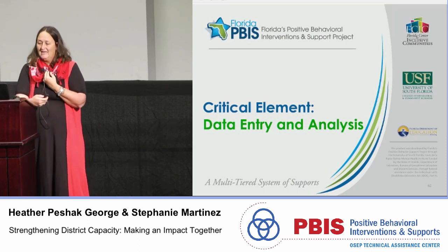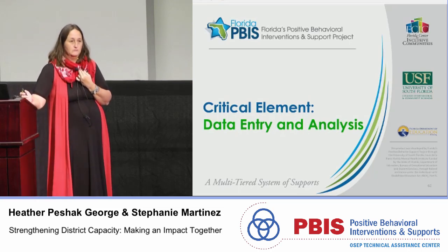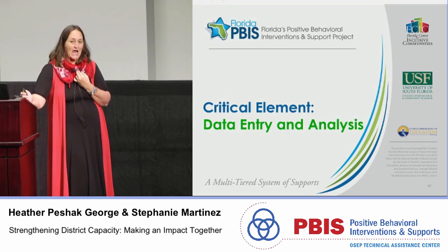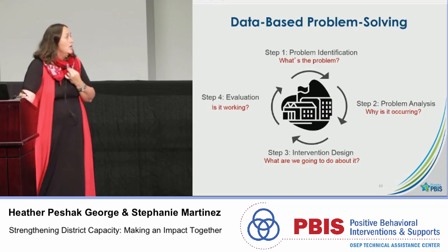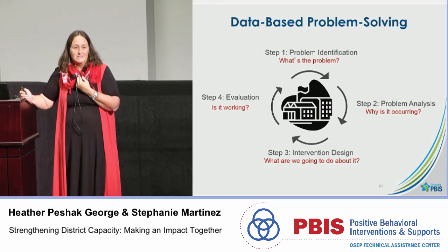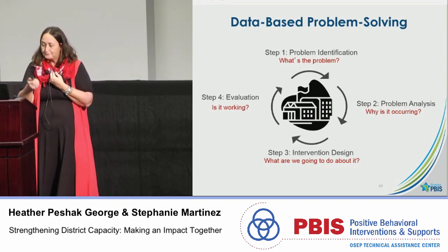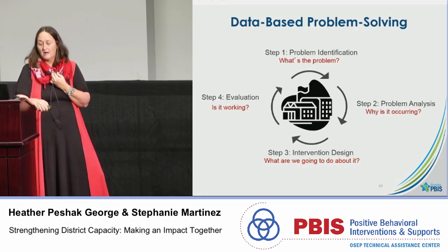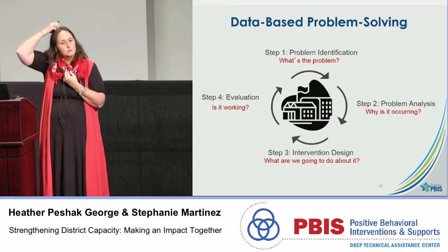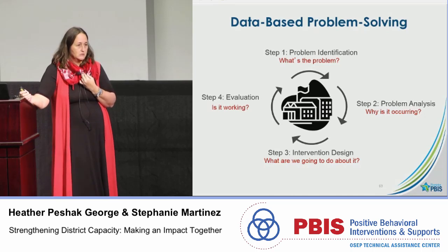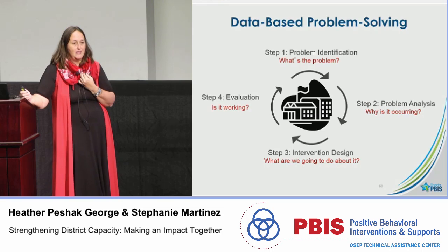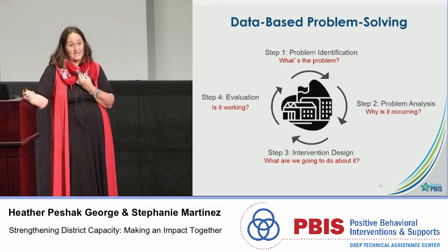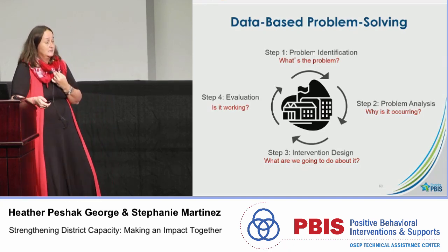The last critical element is looking at data and evaluating. How many of you look at your discipline data monthly? How many disaggregate it — by grade level, race/ethnicity, students with disabilities versus without? In Florida, we use a four-step problem-solving process: identify what the problem is, figure out why it's occurring, match interventions to the reason, and evaluate. This is important because schools sometimes assume an increase in referrals is due to a new self-contained unit for students with emotional behavior disorders, but when you actually look at the data, that's not always the case. We want schools to look at data to confirm what's really the problem.